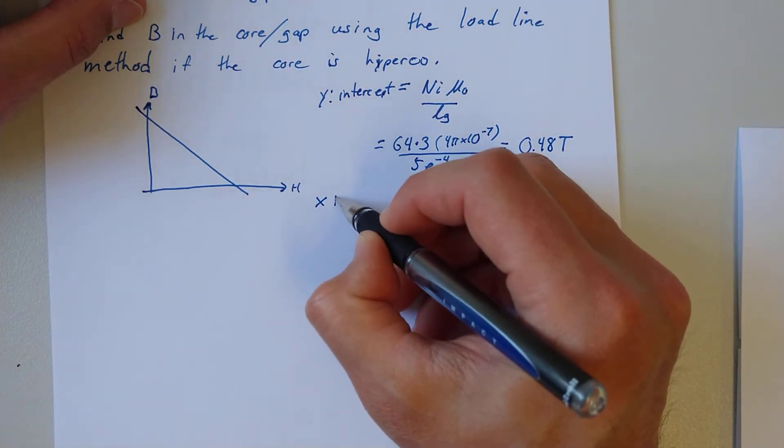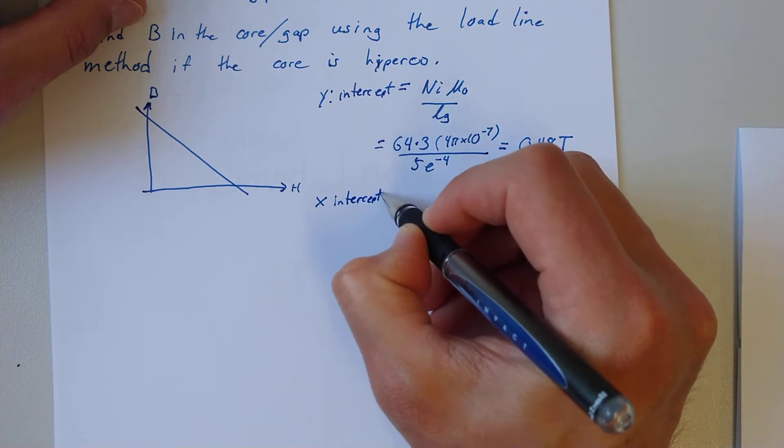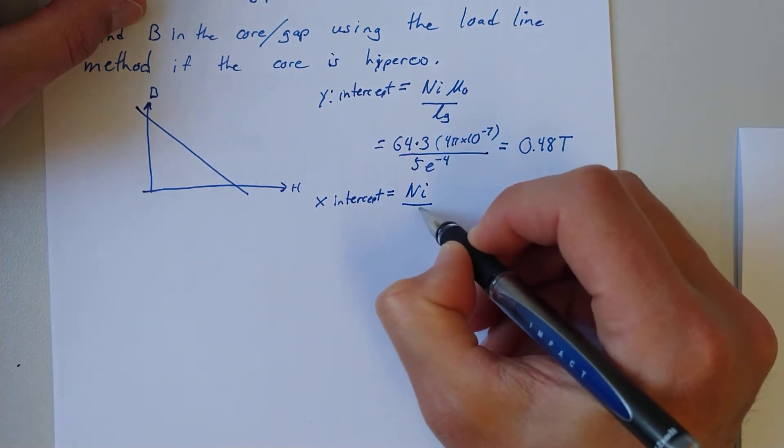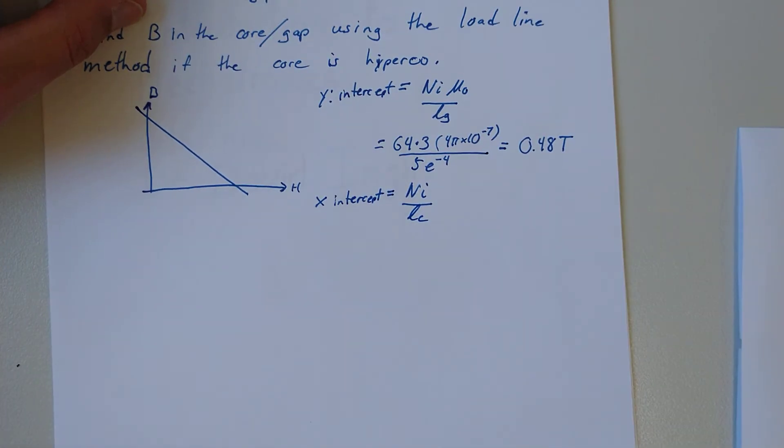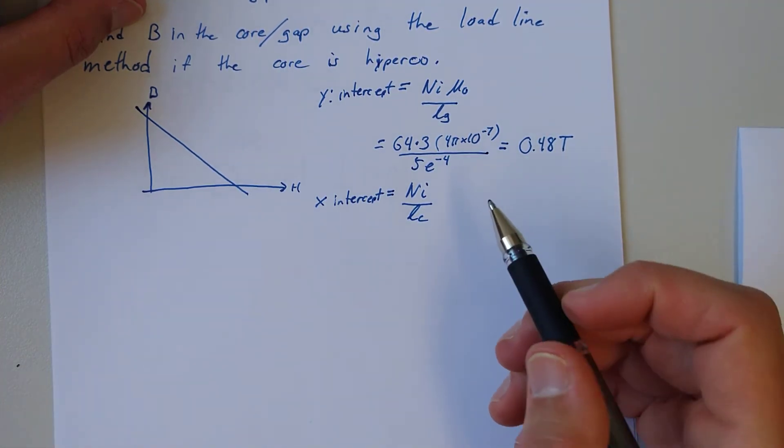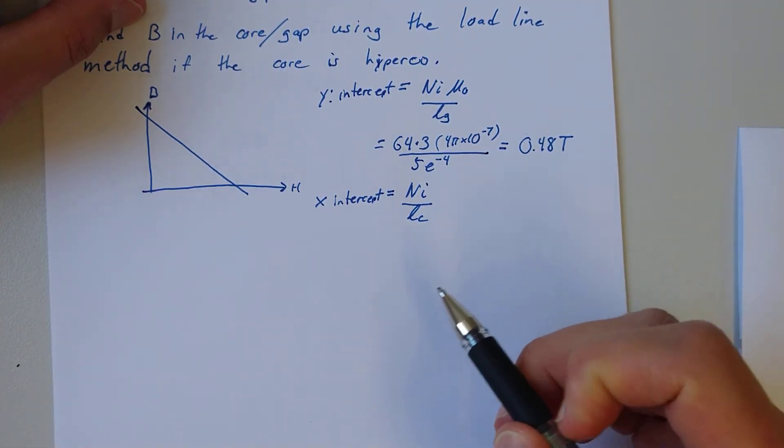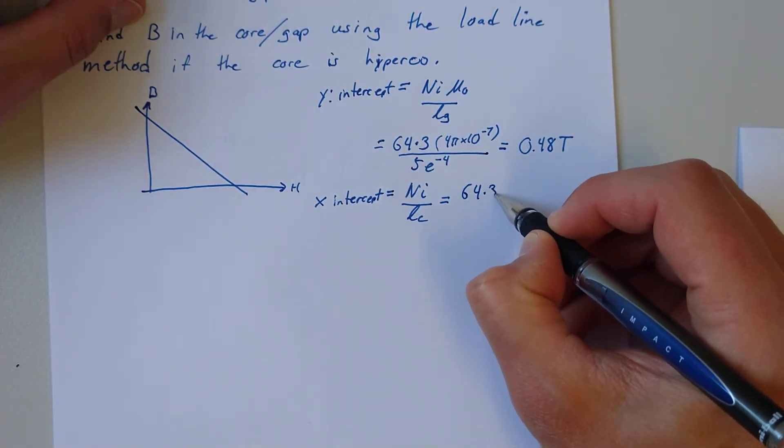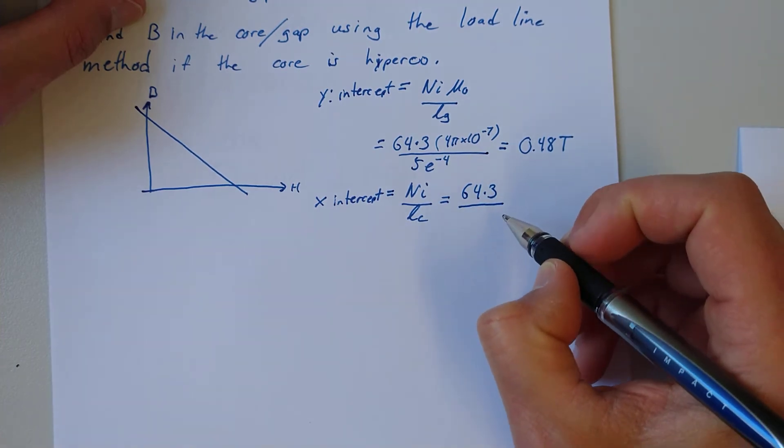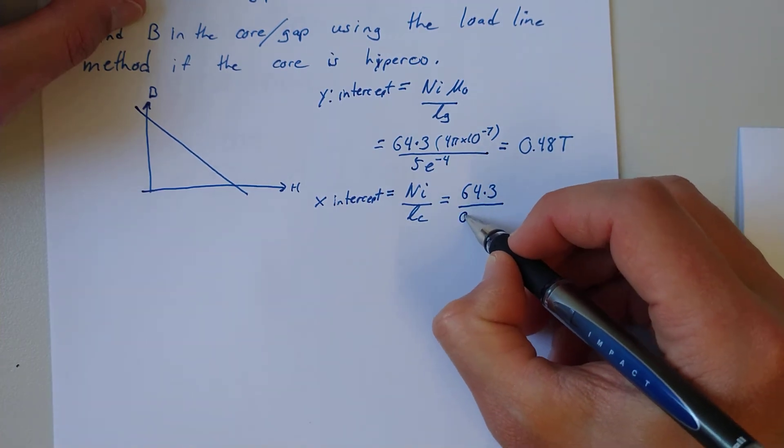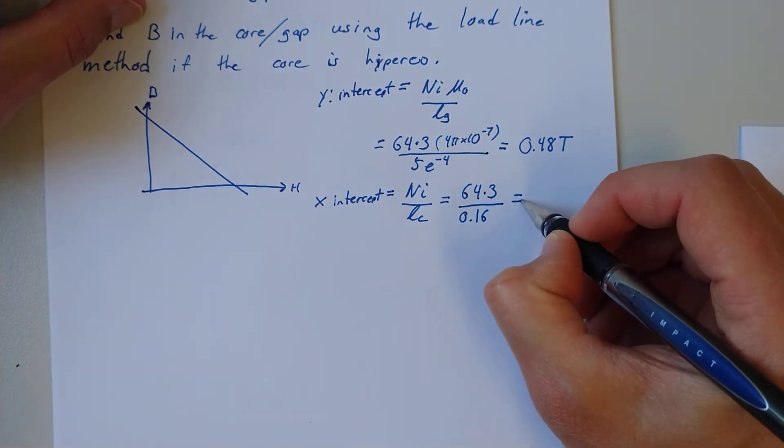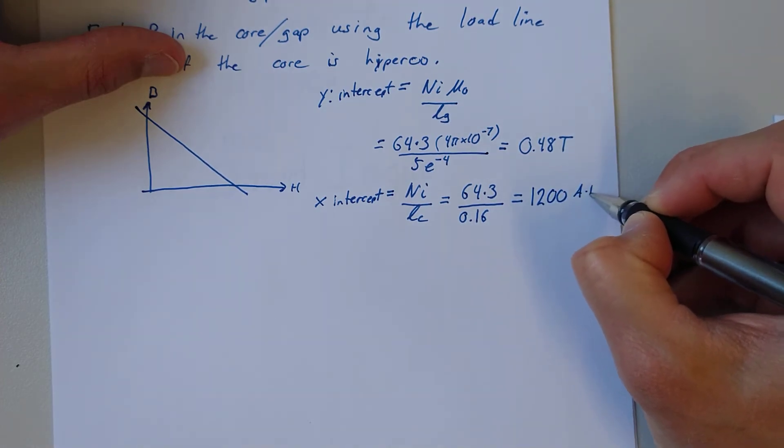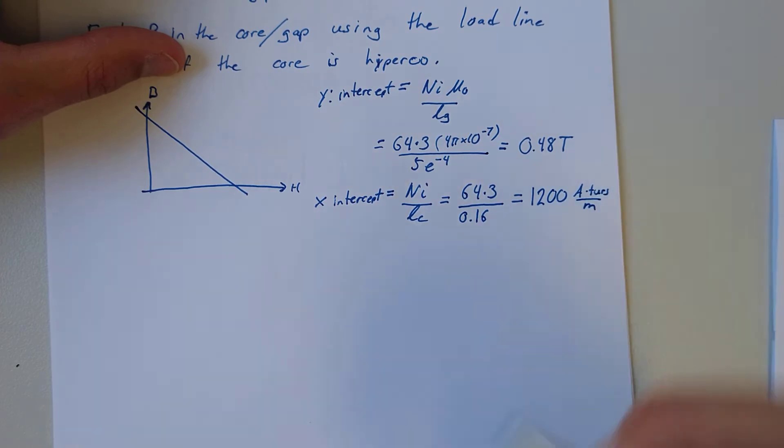The x-intercept is given by n*i over the length of the core. This is the H field if the core had no gap in it, or the gap was zero. Here we have 64 times 3 in ampere-turns per meter over 0.16, and that equals 1,200 ampere-turns per meter.